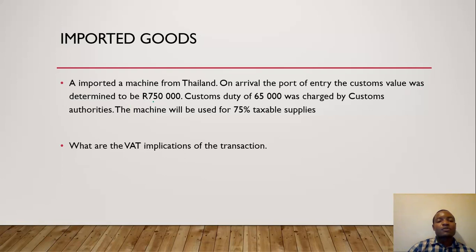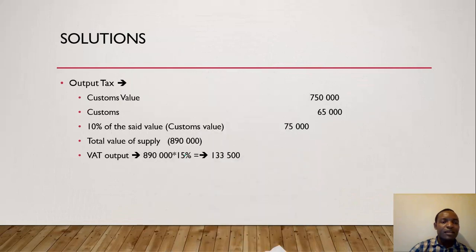We have a short example to help us understand. An imported machine from Thailand, and on arrival, the port of entry Customs value was determined to be $750,000. The customs duty was charged at $65,000. If you were listening properly to my explanations before, you can pause the video right now and try to determine the VAT implications. Try to calculate the VAT, then continue to check your answer and see if you missed anything.